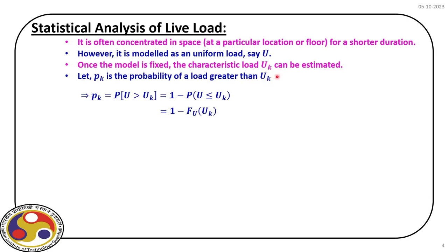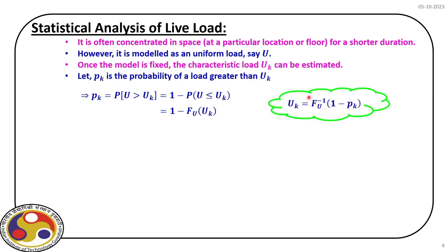From this, uk will be F_u inverse of (1 minus pk). As a designer, we set this pk value, and from this expression we can actually identify what will be the characteristic live load.